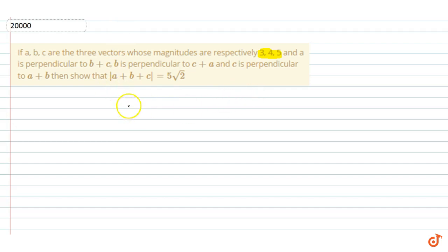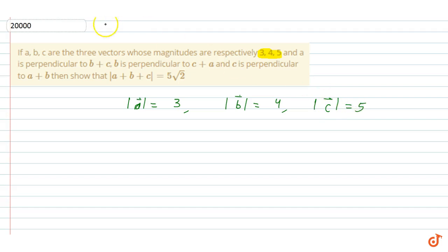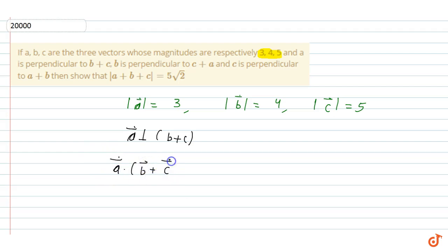We have: magnitude of A vector equals 3, magnitude of B vector equals 4, and magnitude of C vector equals 5. Since A vector is perpendicular to B plus C, we have A vector dot (B vector plus C vector) equals 0. Expanding: A·B + A·C = 0. This is equation number 1.